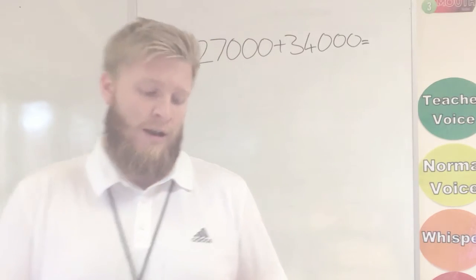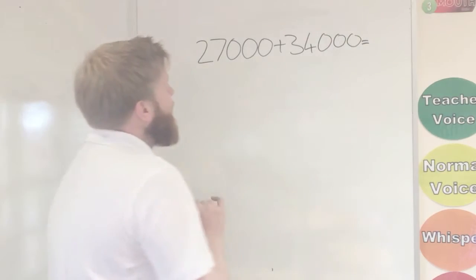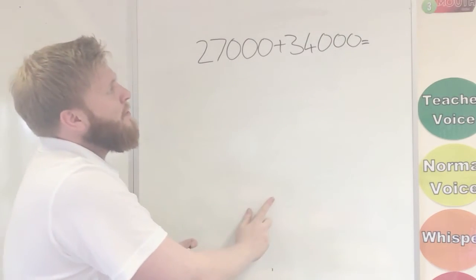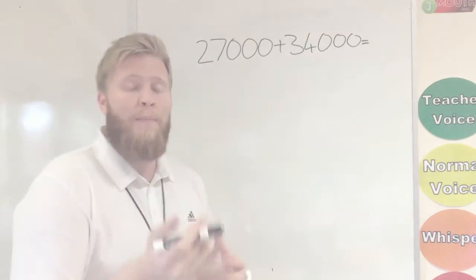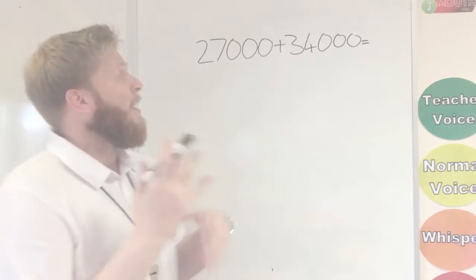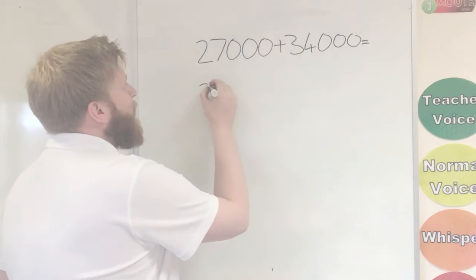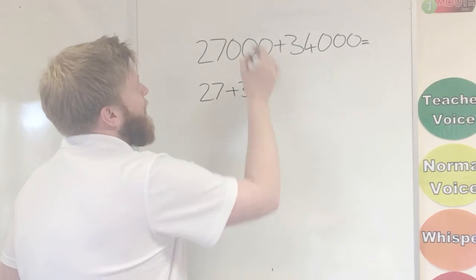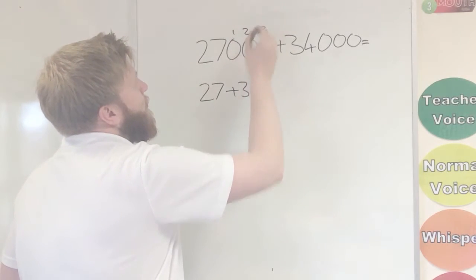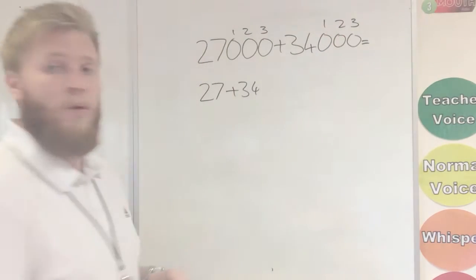So firstly, we're going to look at a little way to do this by making the numbers small. So I've got some here, 27,000 plus 34,000. And that's quite big numbers, so make it a bit harder to work out. What we can do is we can take our zeros off. So I have taken off one, two, three zeros from each side.